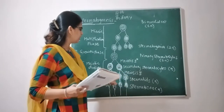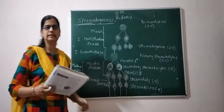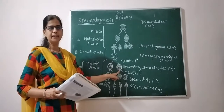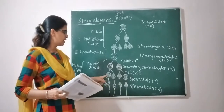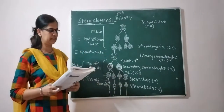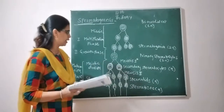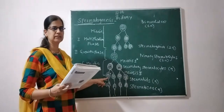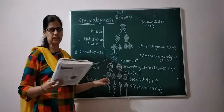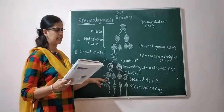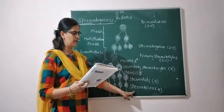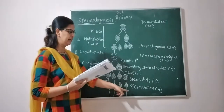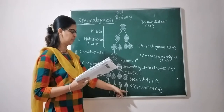This division produces 4 haploid spermatids. Spermatids are non-mobile and non-functional, and they get transferred into functional spermatozoa in a process called spermiogenesis. During this process, spermatids remain held to each other by cytoplasmic bridges.